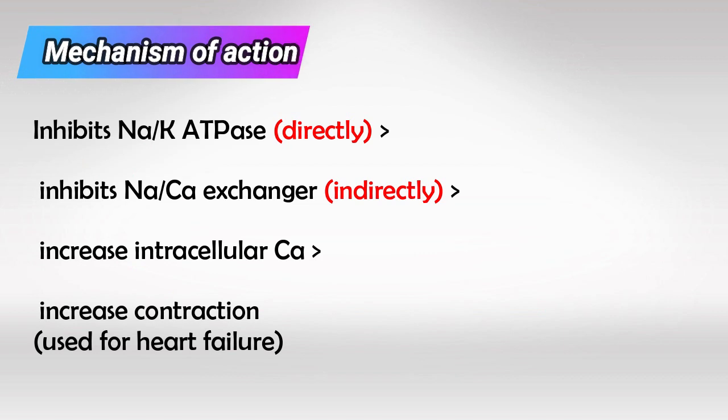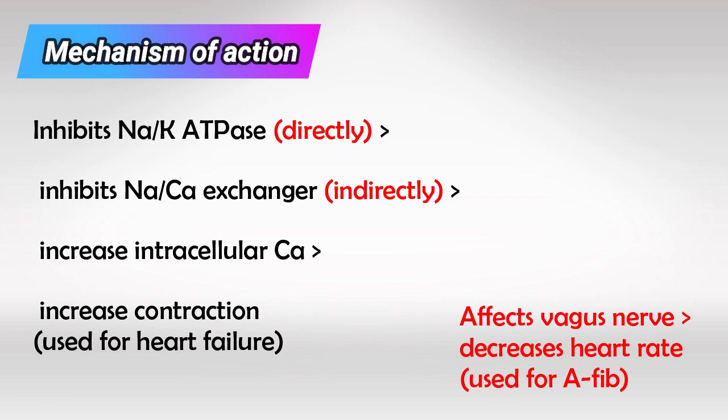And here is the text if you want to read it. Note that digoxin also affects vagus nerve to decrease heart rate. So we have two main uses for digoxin: to decrease heart rate by affecting vagus nerve and to increase contraction in patients with heart failure.